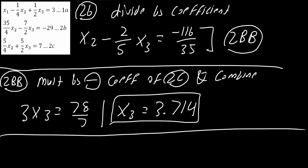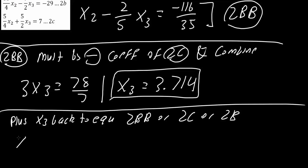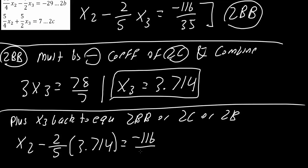Next, we plug x3 equals 3.714 back into equation 2bb, 2b, or 2c — any of these three equations will work since we now know x3 and can solve for x2. Using equation 2bb, we get x2 minus 2/5 times 3.714 equals negative 116/35, which gives us x2 equals negative 1.829.